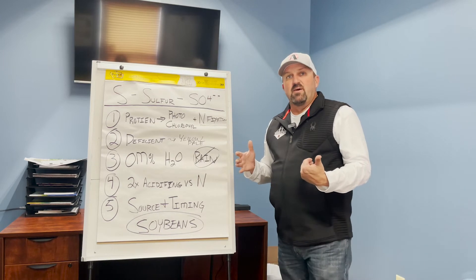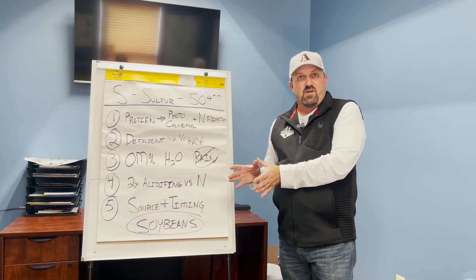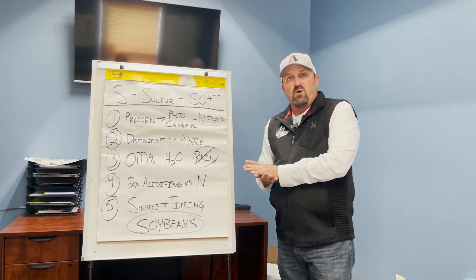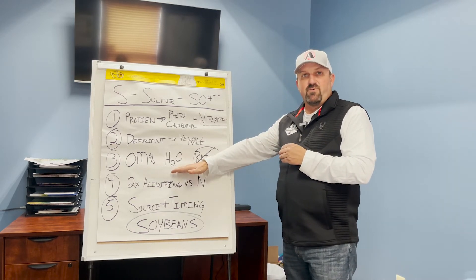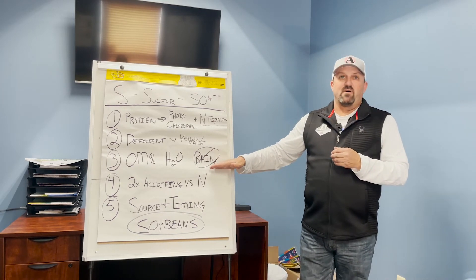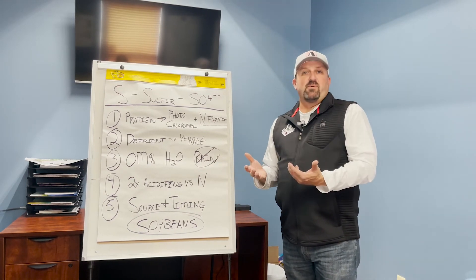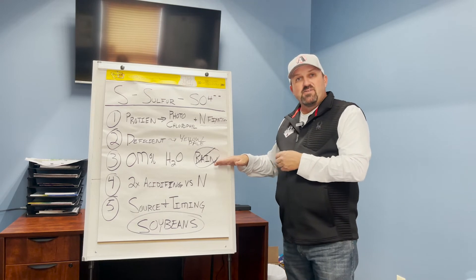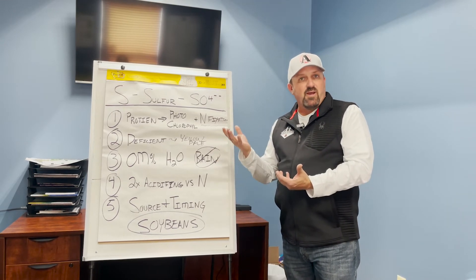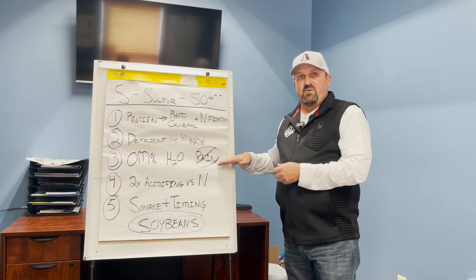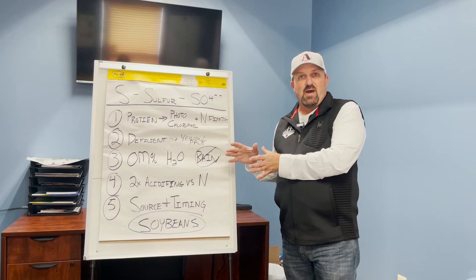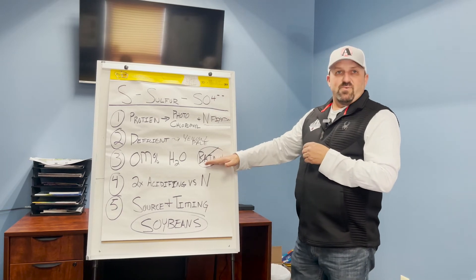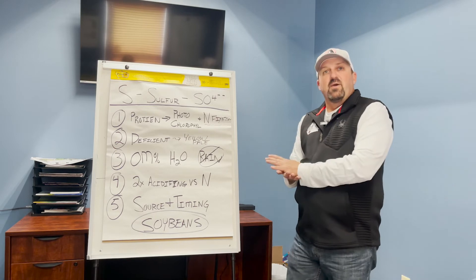In sandy, 1% organic matter soils, sulfur applications have been necessary for many years — sometimes 40 years of applications. You can also get sulfur from irrigation water, so it's important to know what's in your well water. We also used to get sulfur from rainfall through acid rain, but we've cleaned up coal plant emissions and no longer receive it that way. There are charts showing the decrease in atmospheric and soil sulfur around former coal-burning areas.